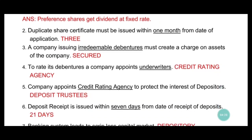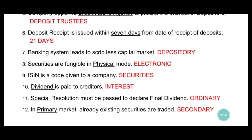Sixth one: deposit receipt is issued within seven days from the date of receipt of deposit. Seven days is not correct — it is given in 21 days. You can see page number 85. The procedure for accepting deposit from members is covered in the reduced syllabus. So the deposit receipt, which says seven days, changes to 21 days.